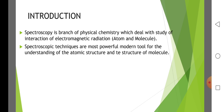Introduction. Spectroscopy is the branch of physical chemistry which deals with the study of interaction of electromagnetic radiation with atoms and molecules. Spectroscopic techniques are the most powerful modern tools for understanding atomic structure and the structure of molecules.